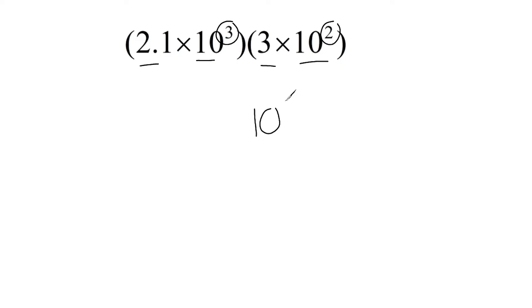Because the laws of exponents state that whenever you're multiplying bases that are exactly the same together, you can simply add their exponents. So if we multiply 10 to the third power times 10 to the second power, that would give us in total 10 to the fifth power. And then what we can do is we can take these two values and multiply those together. 2.1 multiplied by 3 would give us 6.3.